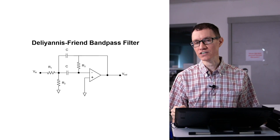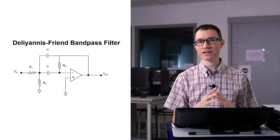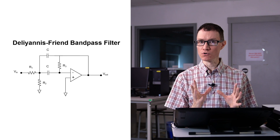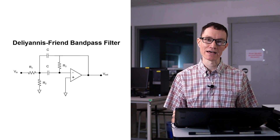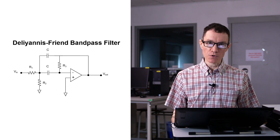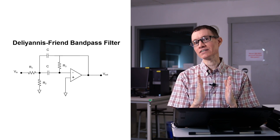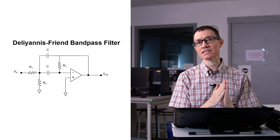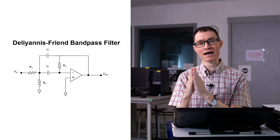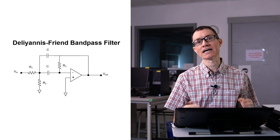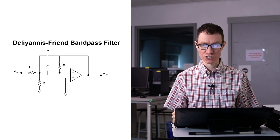A Deliyannis-Friend circuit allows creation of a 2-pole filter using just one op-amp. The appropriate time to use such a filter is when the passband — or the distance in terms of frequency between the high-pass and low-pass side of a filter — is not very large. Let's go ahead and design one of these Deliyannis-Friend filters.